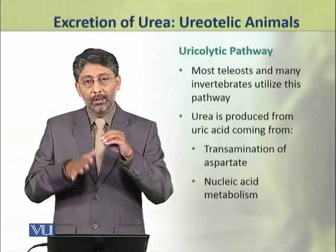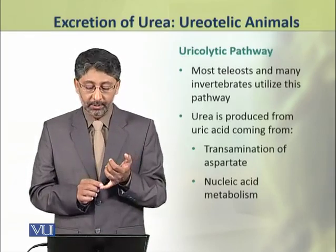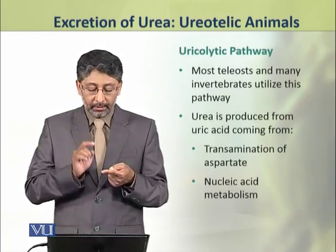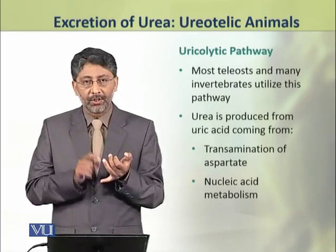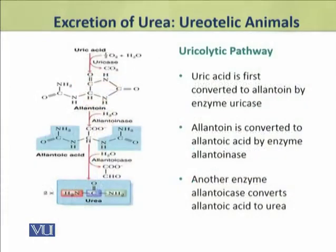Now we shall discuss the ureolytic pathway. Most teleosts and many invertebrates utilize this pathway. Urea is produced from uric acid, which comes from transamination of aspartate and from nucleic acid metabolism. In the ureolytic pathway, uric acid is first converted to allantoin by the enzyme uricase, and allantoin is then converted to allantoate by the enzyme allantoinase.